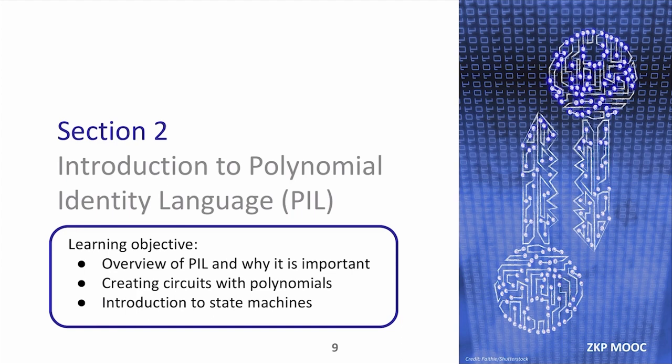Let's start from the bottom layer — what we call the hardware layer — which is how we build circuits with polynomials, how we define polynomial constraints or polynomial identities. To work in this layer, we created a language called PIL, the Polynomial Identity Language, which helps us write these circuits.